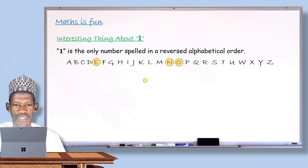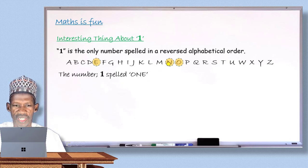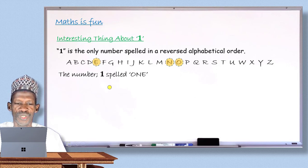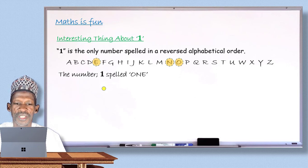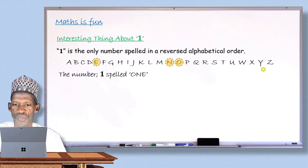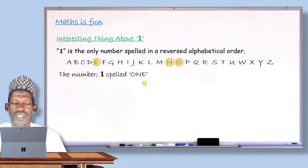The spelling of one is O, N, E. If you read from right to left, you get E, N, O — which follows the reverse alphabetical order. All other numbers, when spelled in English, will not follow this reverse alphabetical order — there will be a skip. Reverse alphabetical order means from Z back to A. Thank you for your attention. We'll see more interesting things in mathematics in our subsequent lessons.